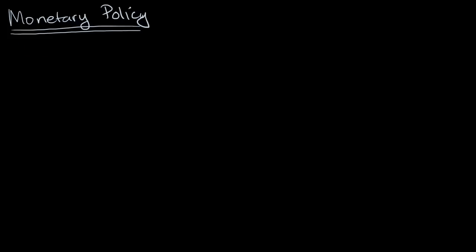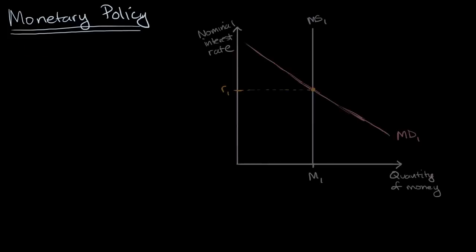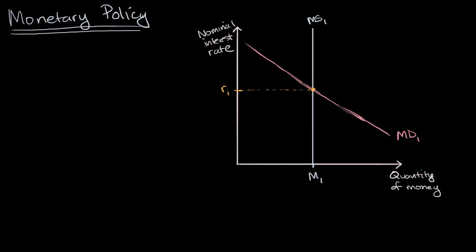But to help us think through monetary policy, let's bring up our model for the money market. Just as a bit of a review, here on the horizontal axis I have the quantity of money, which we can imagine as M1—cash in circulation and checkable deposits. And then here on the vertical axis, we have our nominal interest rate.